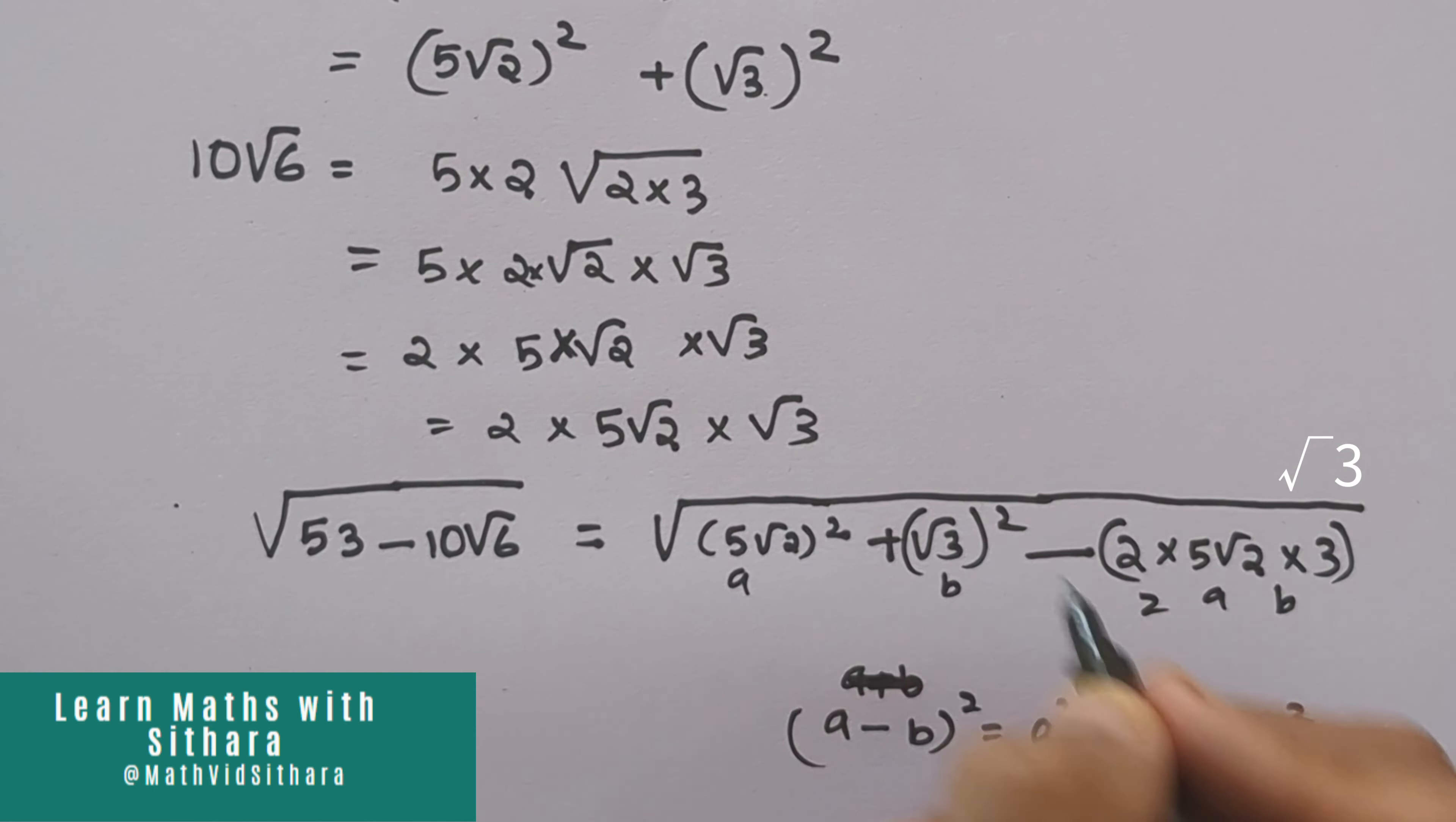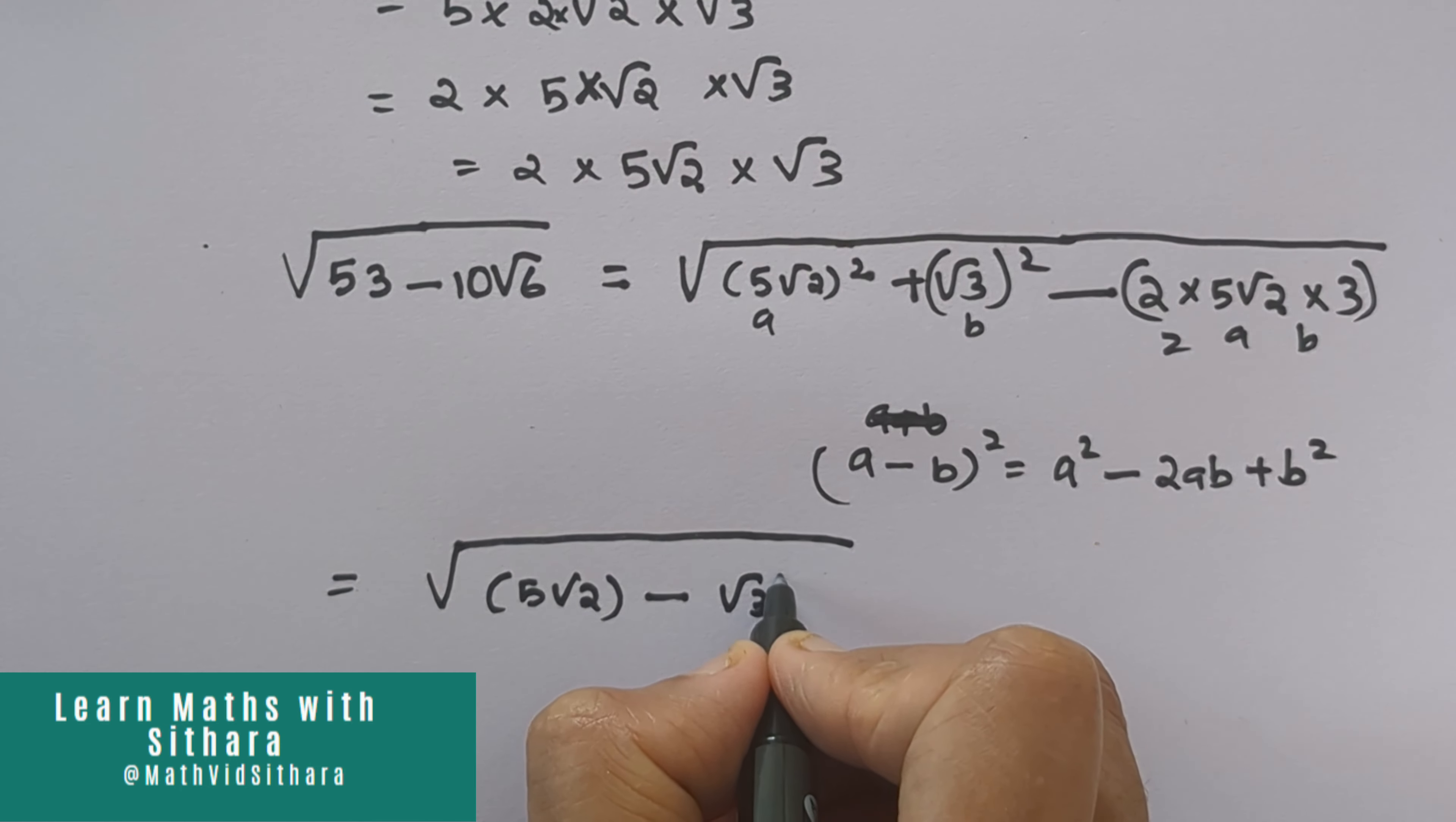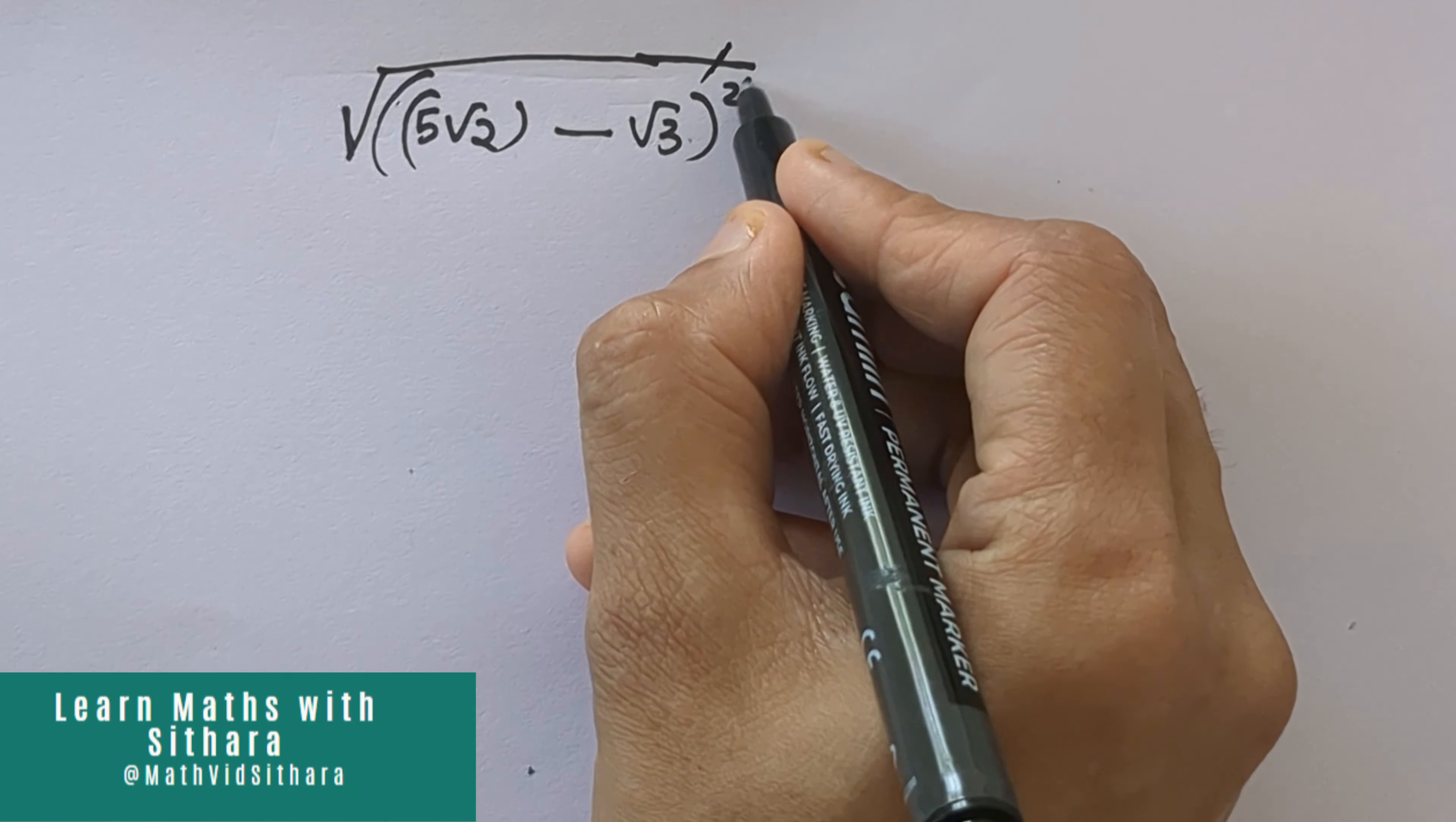So applying this formula here, we get root of 5 root 2 minus root 3 the whole square. The square and root get cancelled, and we get the absolute value of 5 root 2 minus root 3.